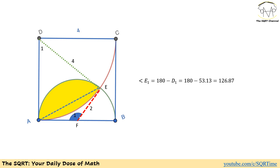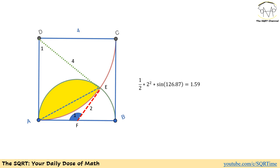Now let's focus on the other side. We are going to find the angle E1 first. E1 can be calculated as 180 minus D1, or around 126.87 degrees. The sector area AFE is calculated as E1/360 times pi times the radius of the semicircle squared, which is 2 squared. The area of triangle AFE is one-half times 2 squared times sine of E1, and the resulting segment area is around 2.82.